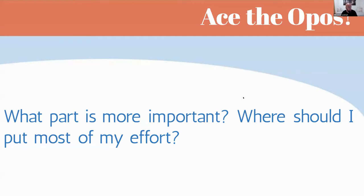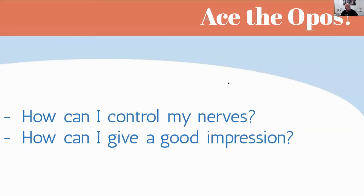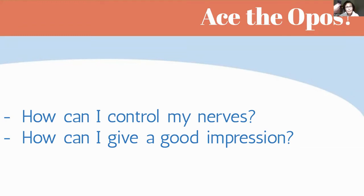That's why in the training course for secondary we create an index of the different topics, so you get used to having that index and then only need to convert it into text. You have the important things to say about each topic and then you can present it or write it. How can I control my nerves and give a good impression? Prepare yourself as well as possible with the assessment criteria — make a grid and tick everything you already know. If you know it, don't worry about it; if there's something you don't know, prepare it.